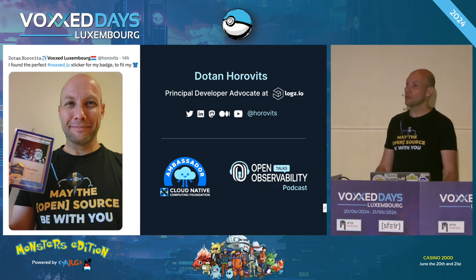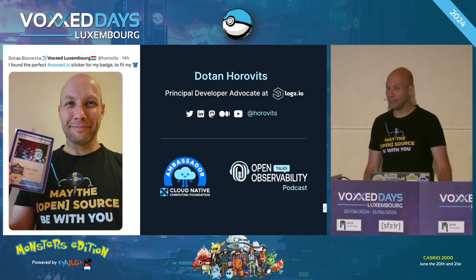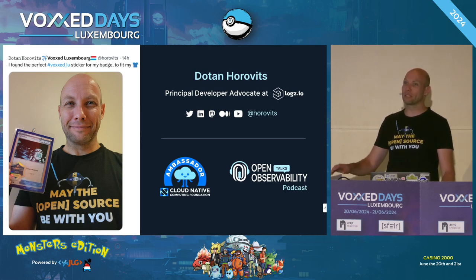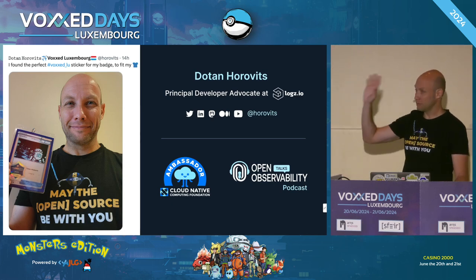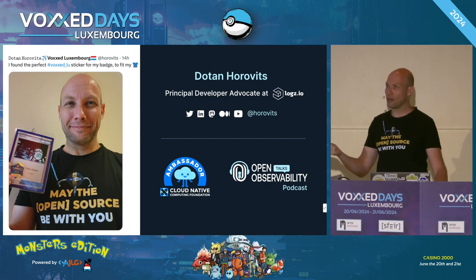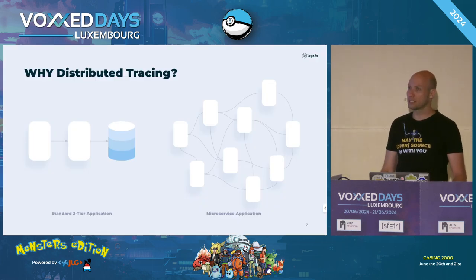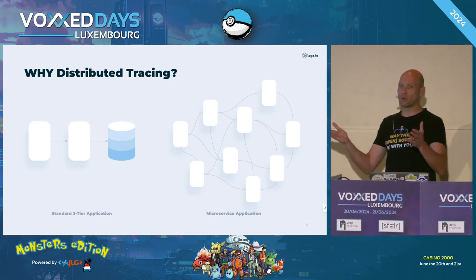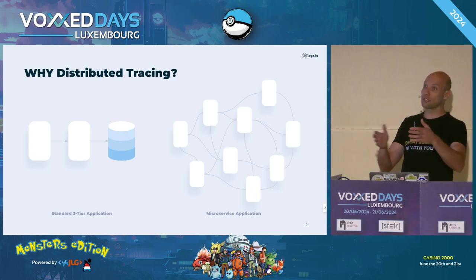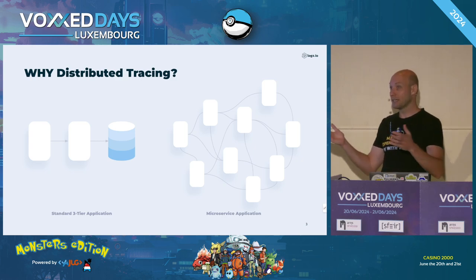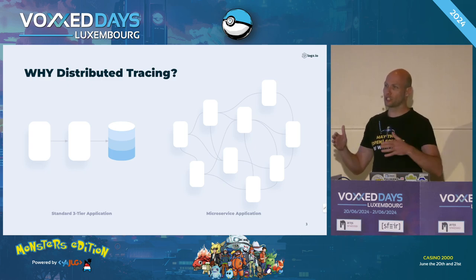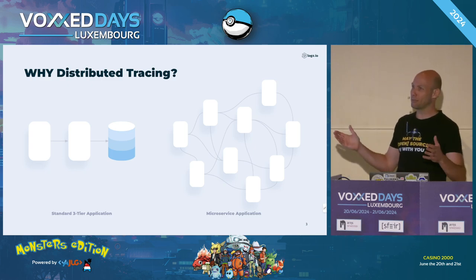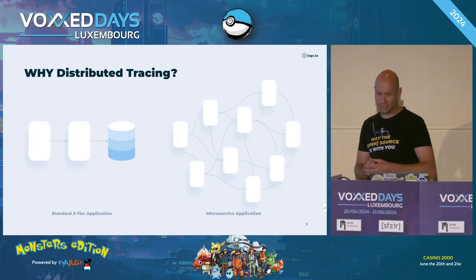Let's start with distributed tracing. How many here are familiar with distributed tracing — show of hands? Not many. So let's talk about why we even need distributed tracing before we talk about how to do it. It's a valid question, because there's a good reason not so many people know about it — certainly not as many as know logging and metrics. Up until not long ago, we didn't actually need tracing in what we call monolith or three-tier applications.